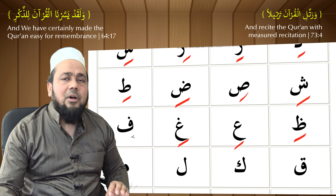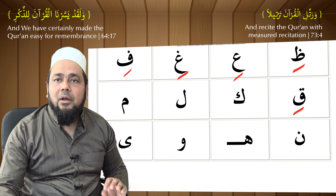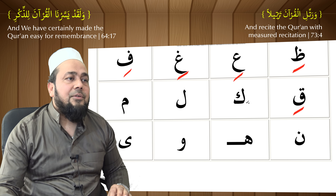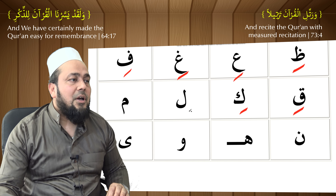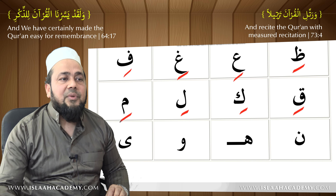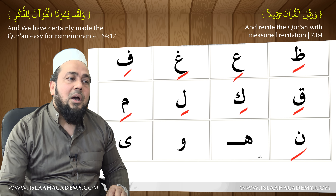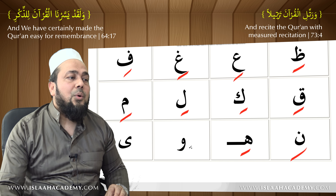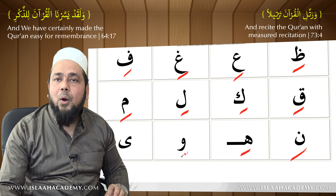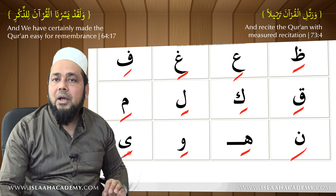Fa kasra — 'fi'. Kaf kasra — 'ki'. Qaf kasra — 'ki', kaf kasra — 'ki'. Lam kasra — 'li'. Meem kasra — 'mi'. Noon kasra — 'ni'. Ha kasra — 'hi'. Waaw kasra — 'wi'. Ya kasra — 'ye'.